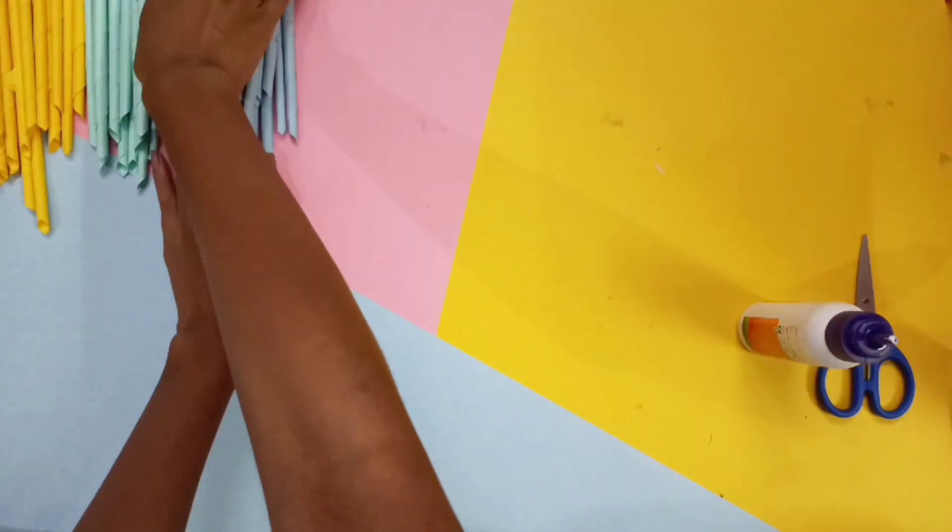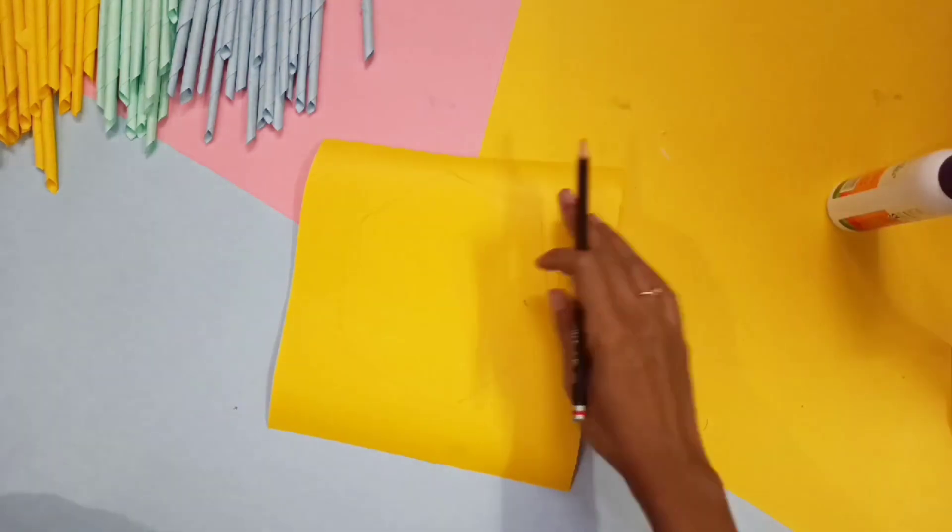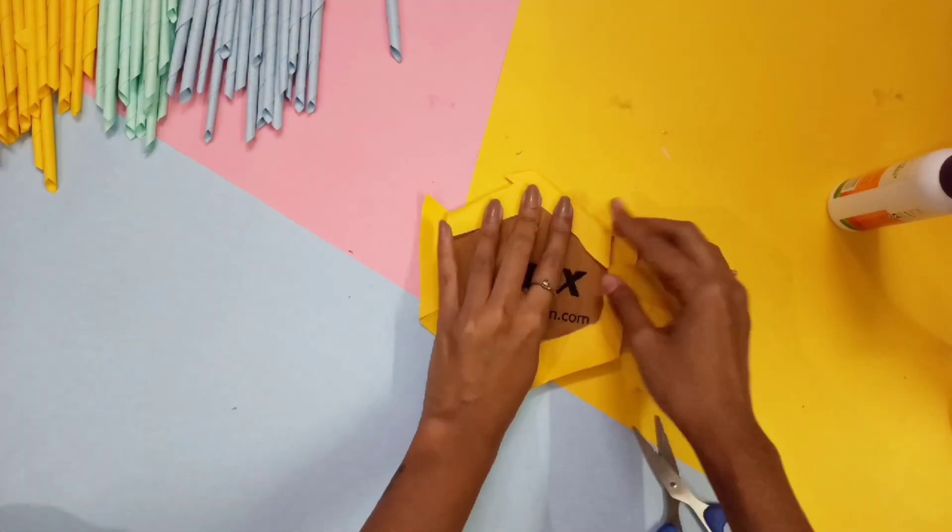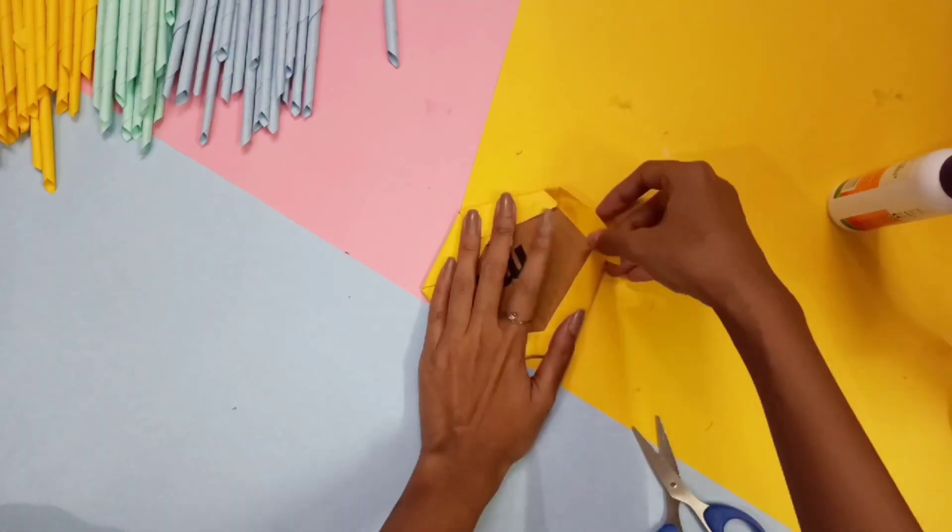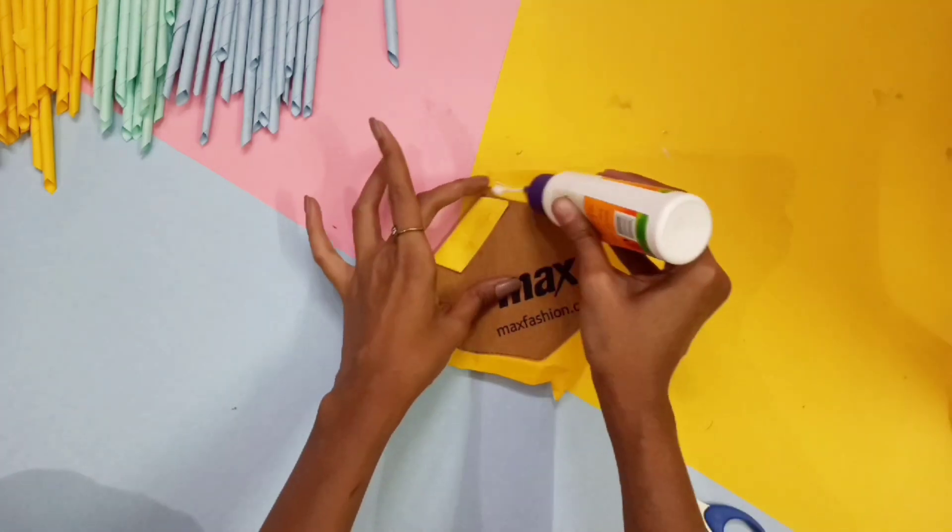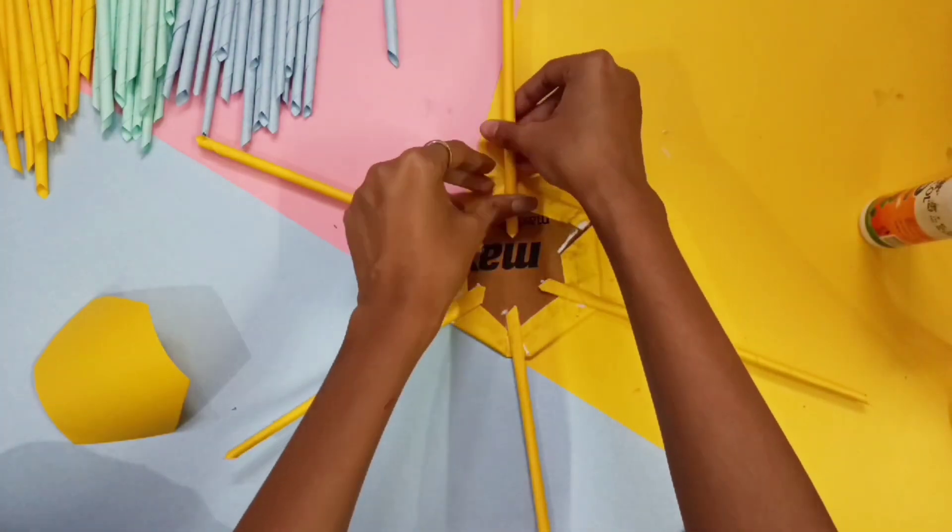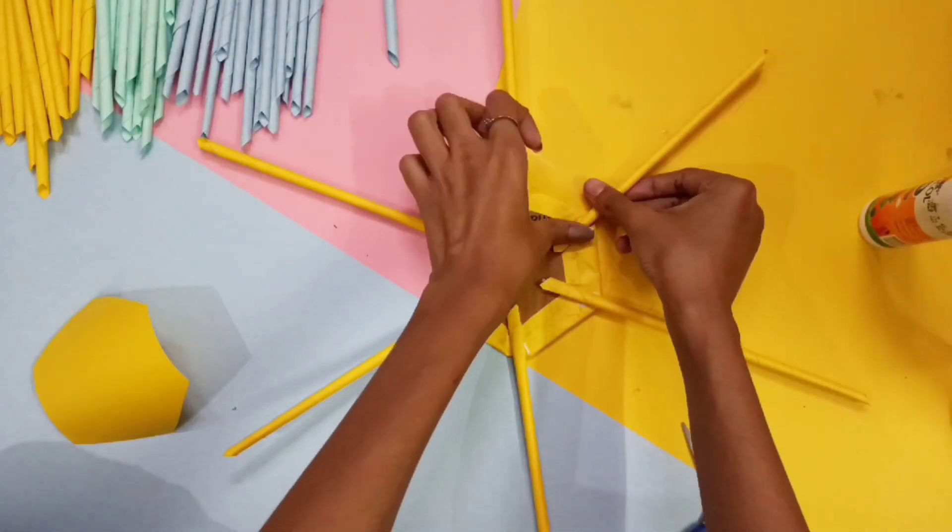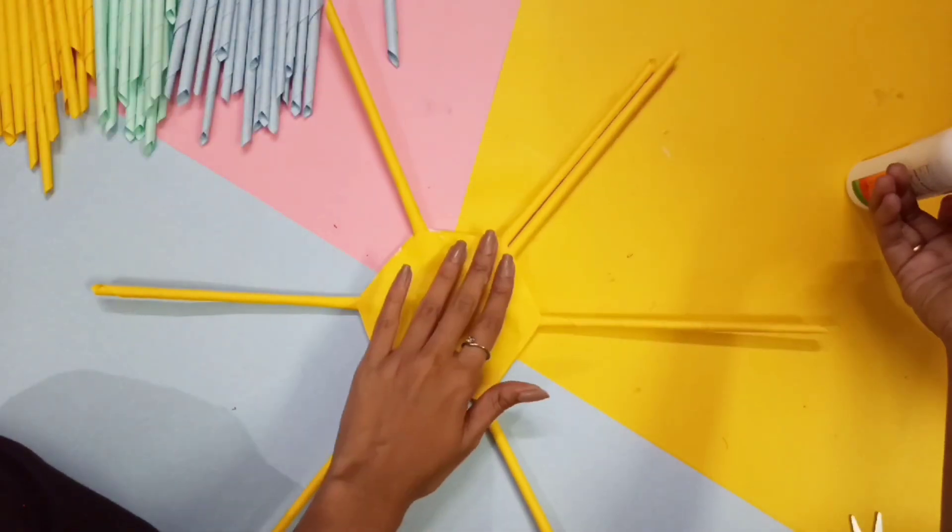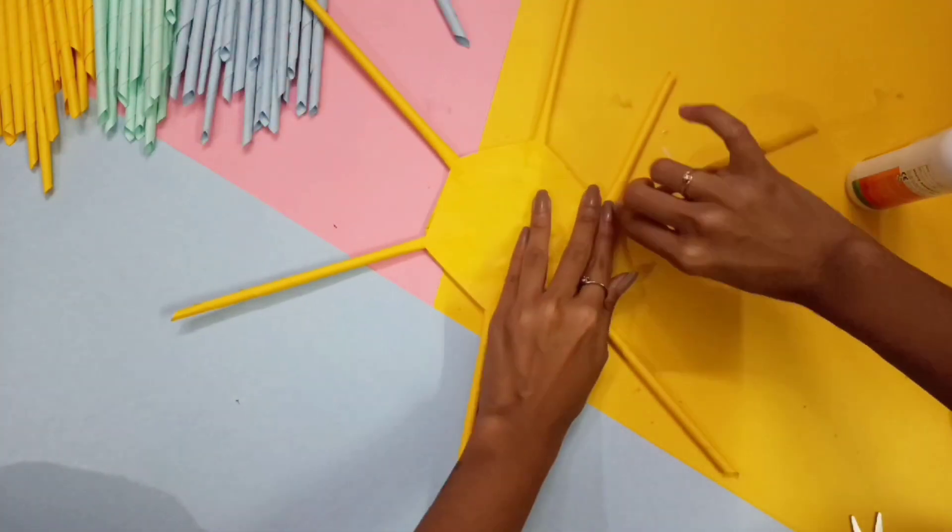For the base of the stand take a cardboard and cut it out into a shape of a hexagon. Then for covering it take a paper and draw a bigger hexagon, cut it out, also cut the corners, then stick it with the cardboard. Now take the roll papers and stick them on top of each and every corner of the base and one extra on one corner. Then cover the upper part of the base with a paper.